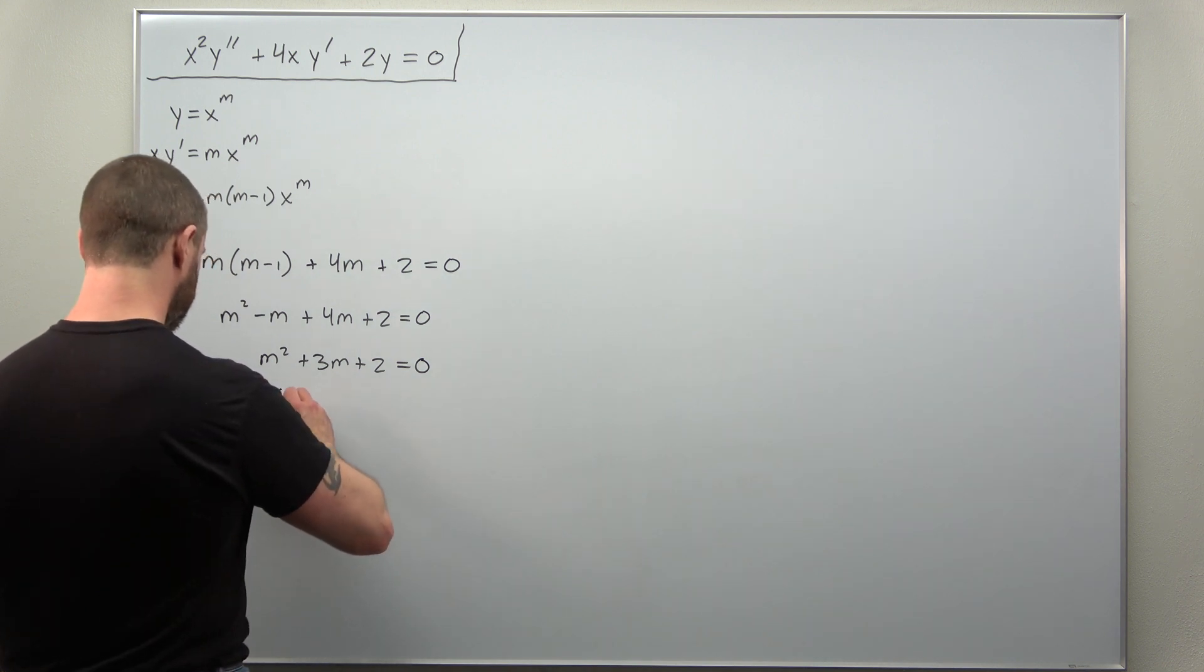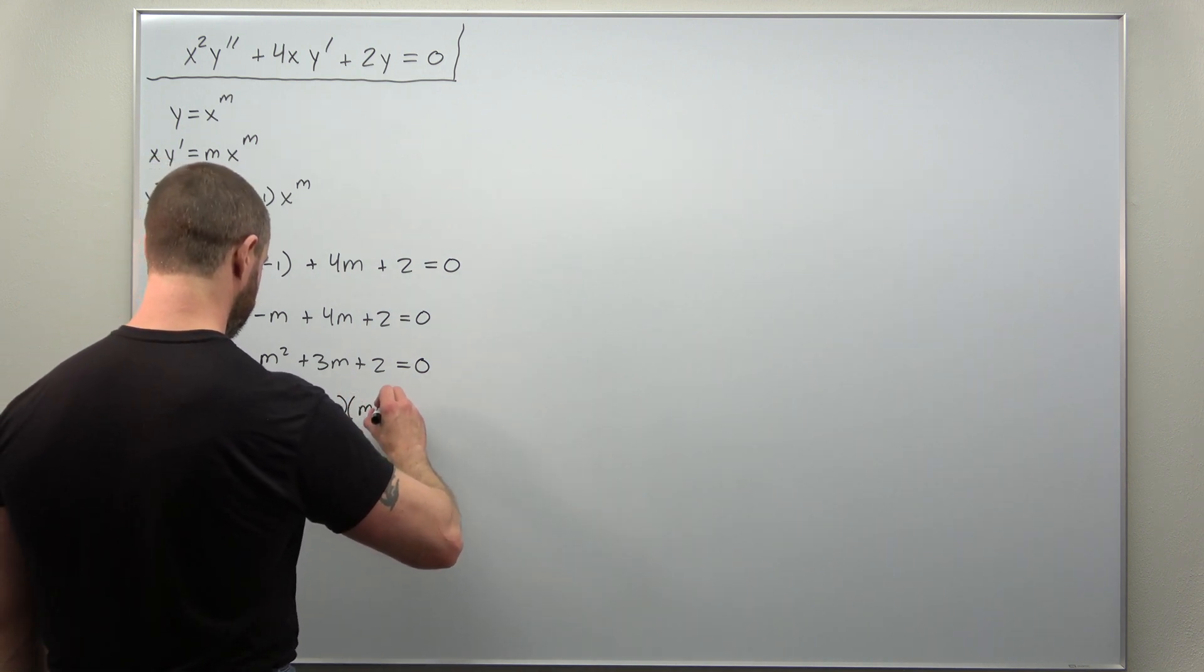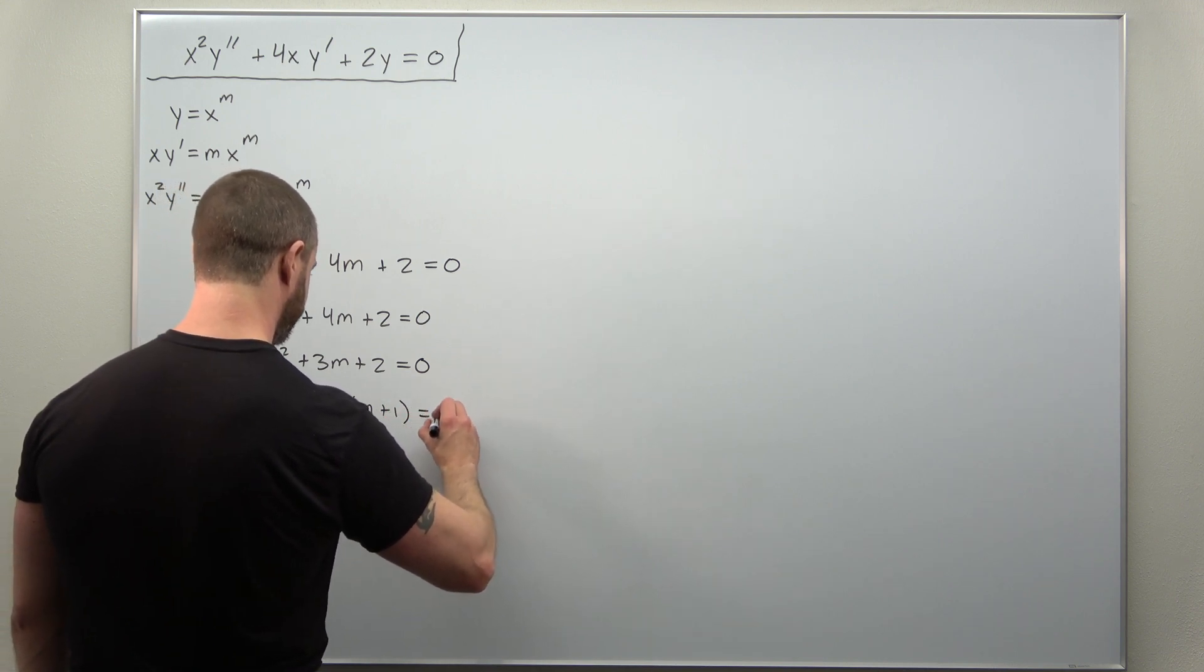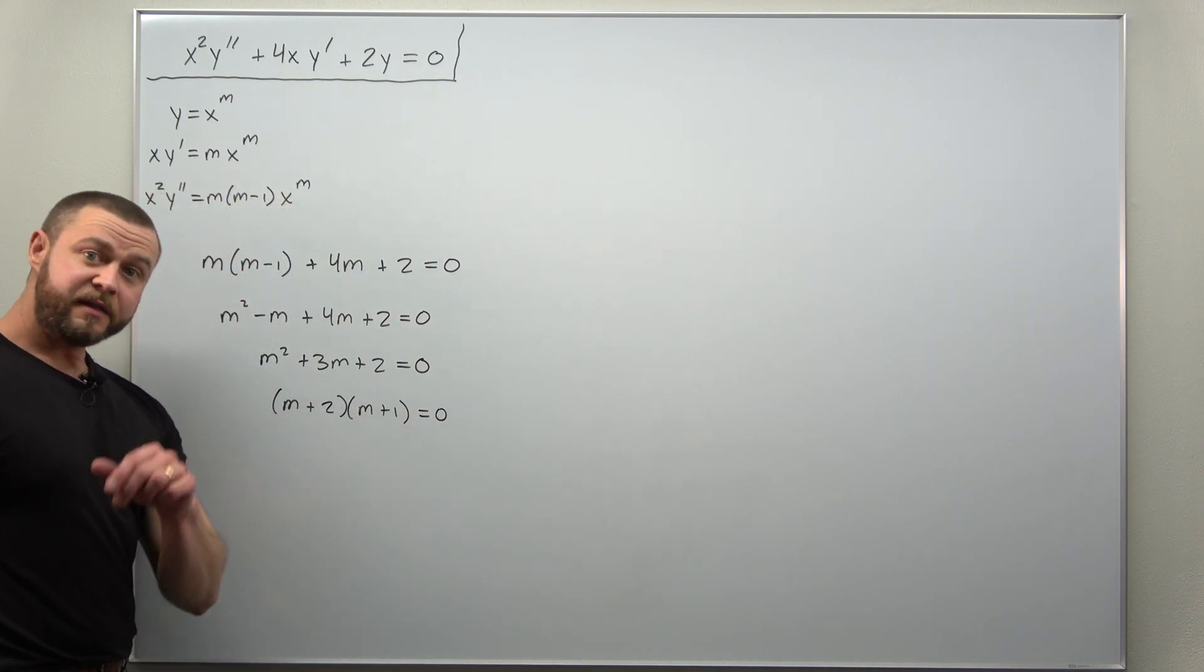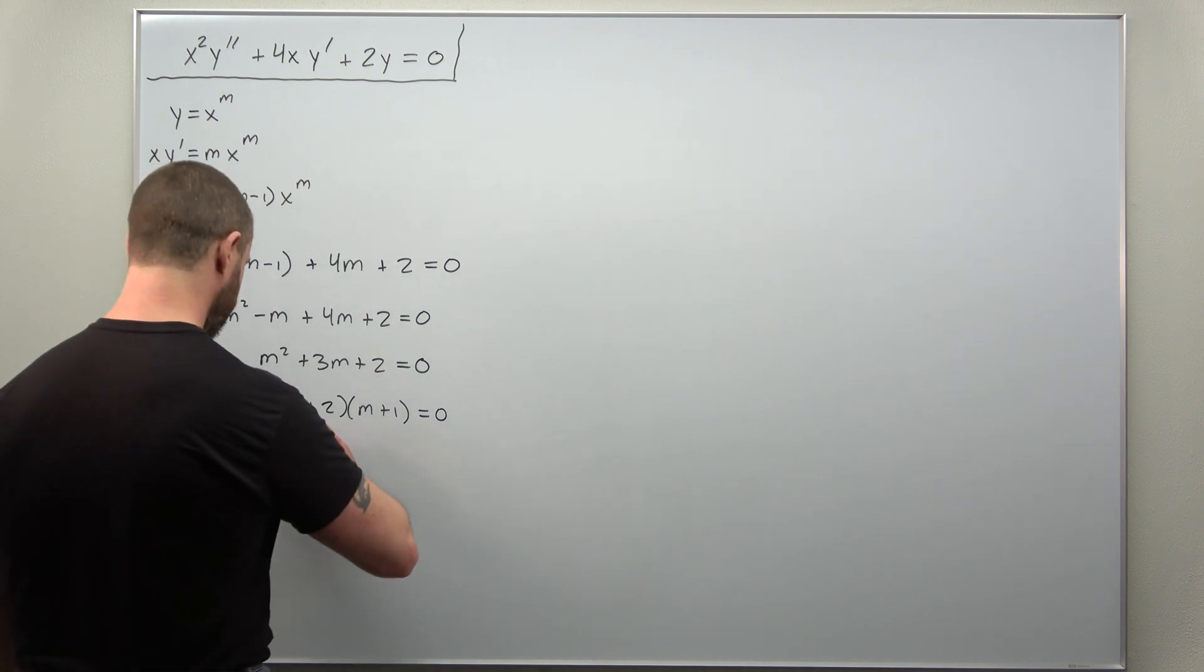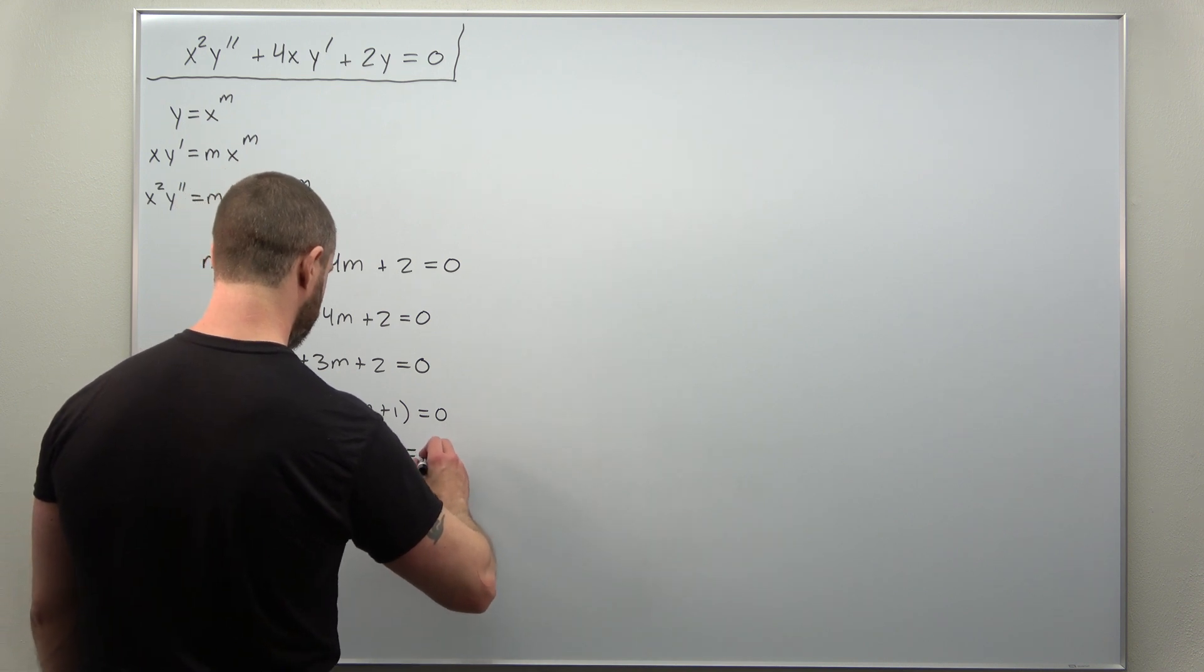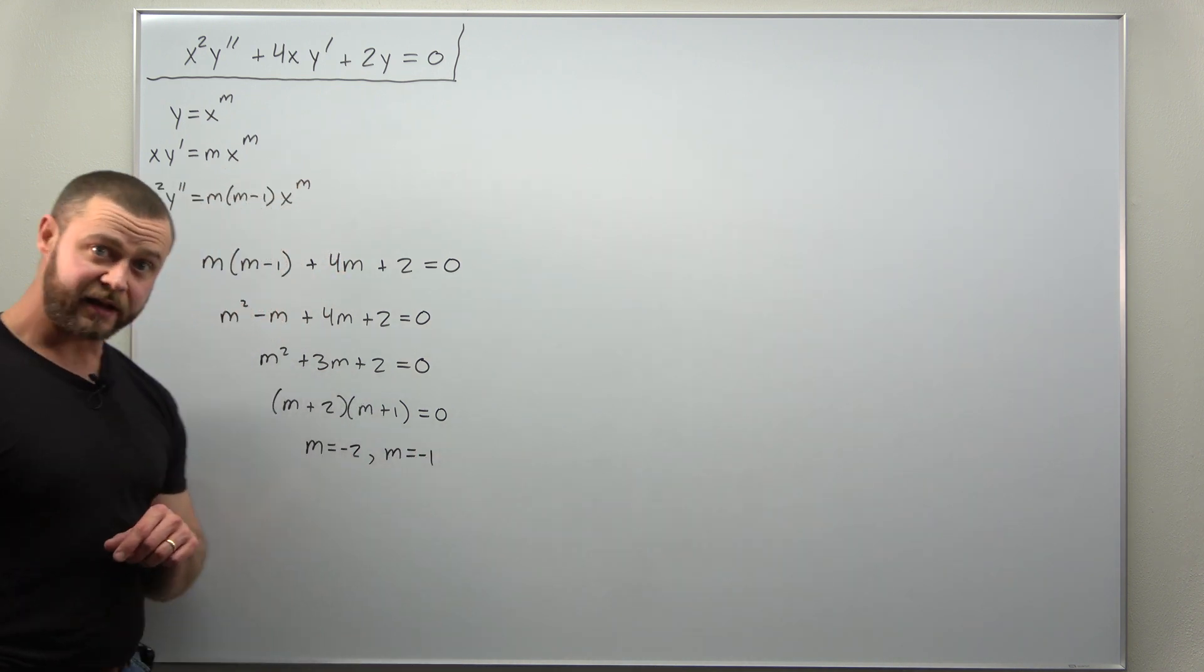This one factors. Looks like we can factor that as m plus 2 times m plus 1, and in this case we get two distinct real roots for m, so we get m equals negative 2 and m equals negative 1.